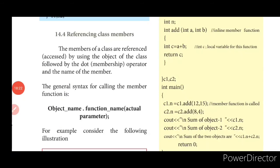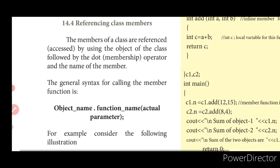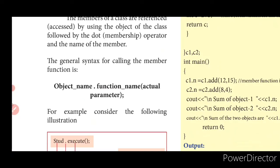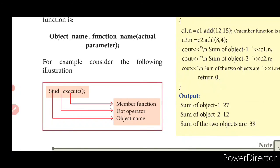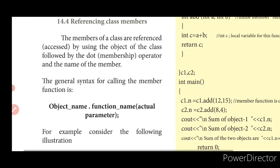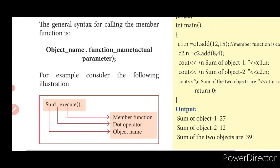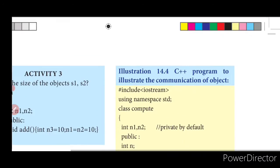The final topic is referencing class members. Members of a class are referenced using the object of the class followed by a dot — that dot is called the membership operator — followed by the name of the member. The syntax is: object name dot function name with actual parameters. For example, 'stud.execute()' — here 'stud' is the object name, dot is the membership operator, and 'execute' is the member function.